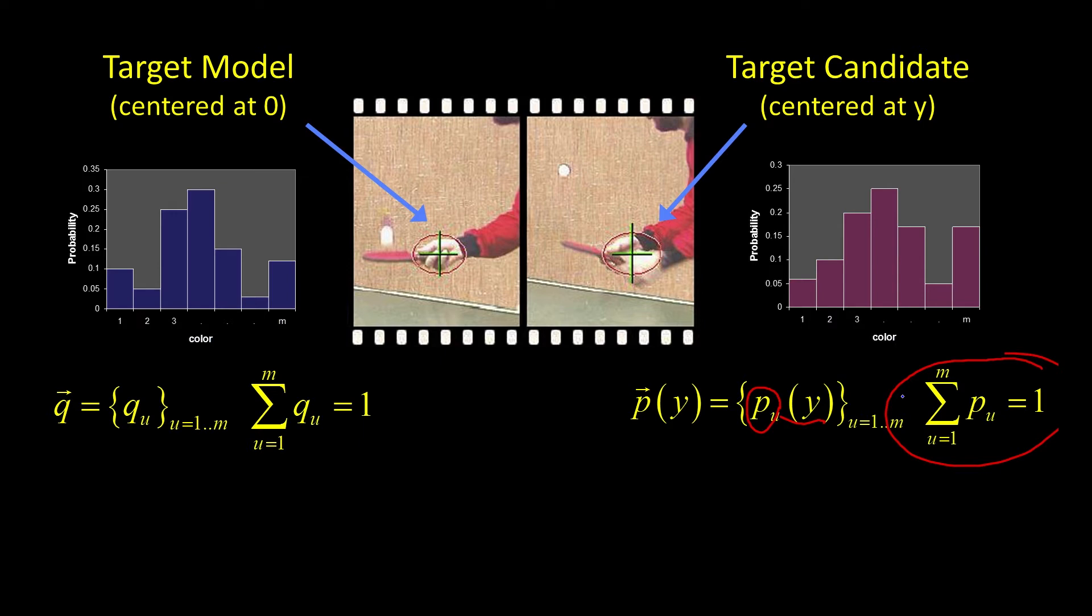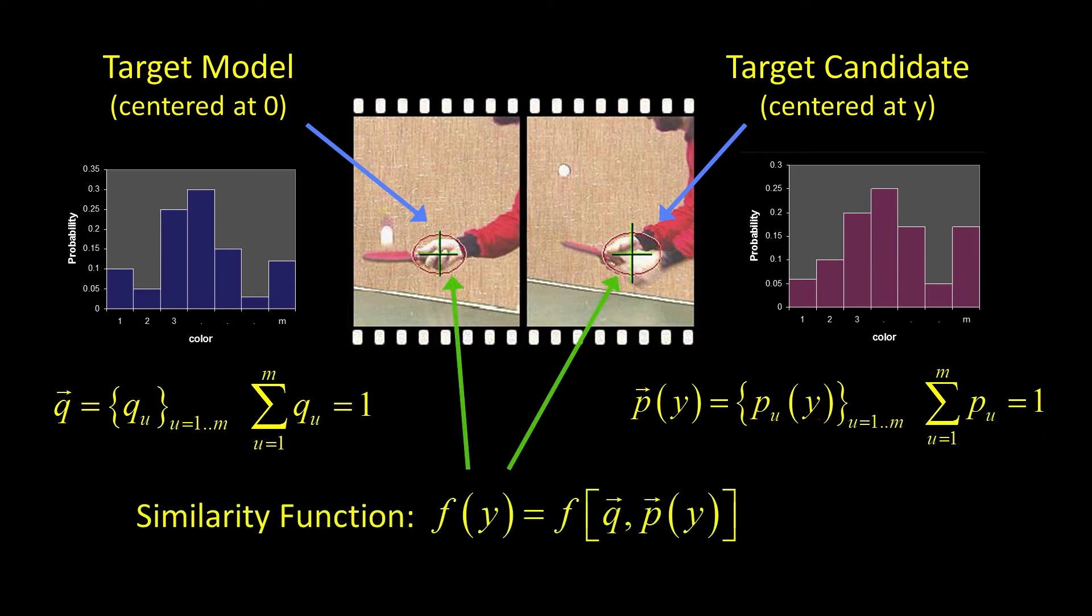So we have these two distributions, and what we have to do is we need a similarity function that compares them, that compares the original q and the new p of y, which is the density at this proposed place. So the question is, how are we going to compare these distributions? Now there are a variety of functions that you can use to compare histograms, where the histograms are normalized to one, so they represent probabilities. There's the min value, there's chi squared, a variety of them.